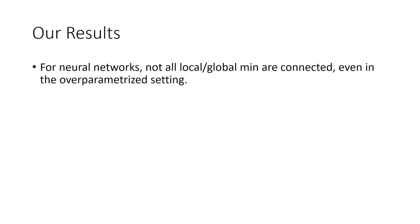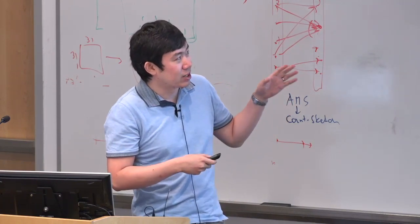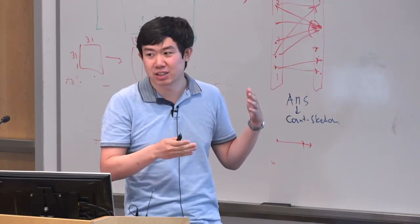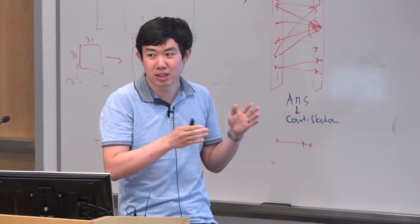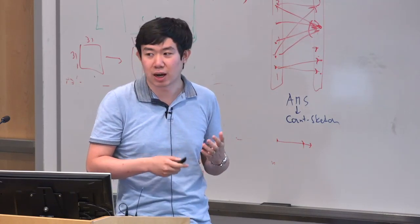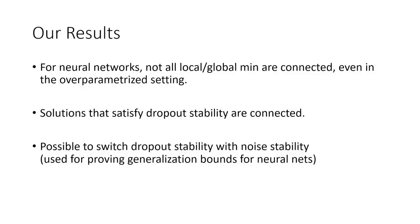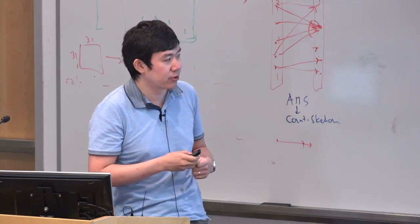Our result shows that for neural networks, not all local or global minima are connected, even in the over-parameterized setting. On the other hand, solutions that satisfy a reasonable property we call dropout stability are actually connected by a path. In the paper, we also show it's possible to replace dropout stability with other notions of stability like noise stability used for proving generalization bounds for neural networks.